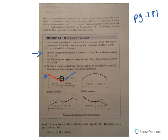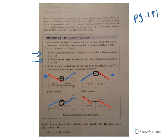Rule two: if f′ changes from positive to negative, then the value is a relative maximum. The last two cases say: if the sign of f′ doesn't change — positive to positive, or negative to negative — then the point is neither a maximum nor a minimum. Those are the tools for identifying maximums and minimums from increasing and decreasing behavior.